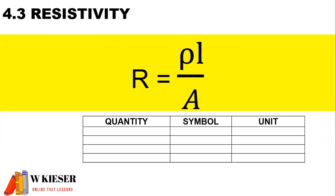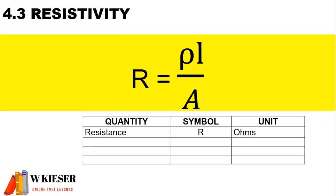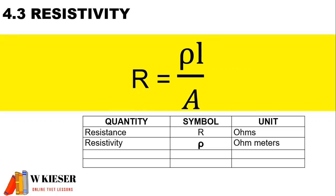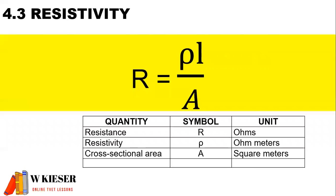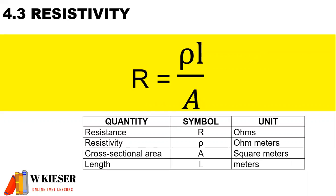In this formula to calculate resistance, it is the resistivity multiplied by the length of the conductor and divided by the cross-sectional area. The units for resistance is ohms, the units for resistivity is ohm meters, the units for cross-sectional area is square meters, and the units for length is meters.